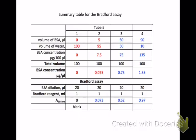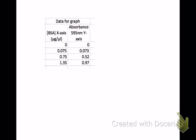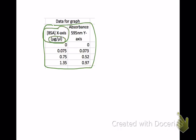Now you want to graph these data. We're going to focus on our absorbance readings and the protein concentration. I'm going to take the BSA concentration, which we determined, and the absorbance, and transfer that information to make two columns so that we can make a graph. It's just simpler to graph it out in this way.